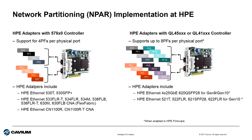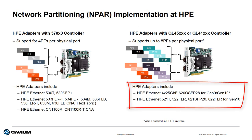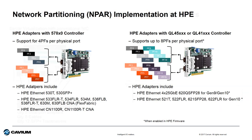At HPE, Calvium has two generations of Ethernet adapters capable of N-PAR. HPE adapters based on the 57800 support four physical functions per port — those are the ones shown on the left here. And those based on the QL41000 or 45000 series support up to eight physical functions per port, and those are shown on the right side.